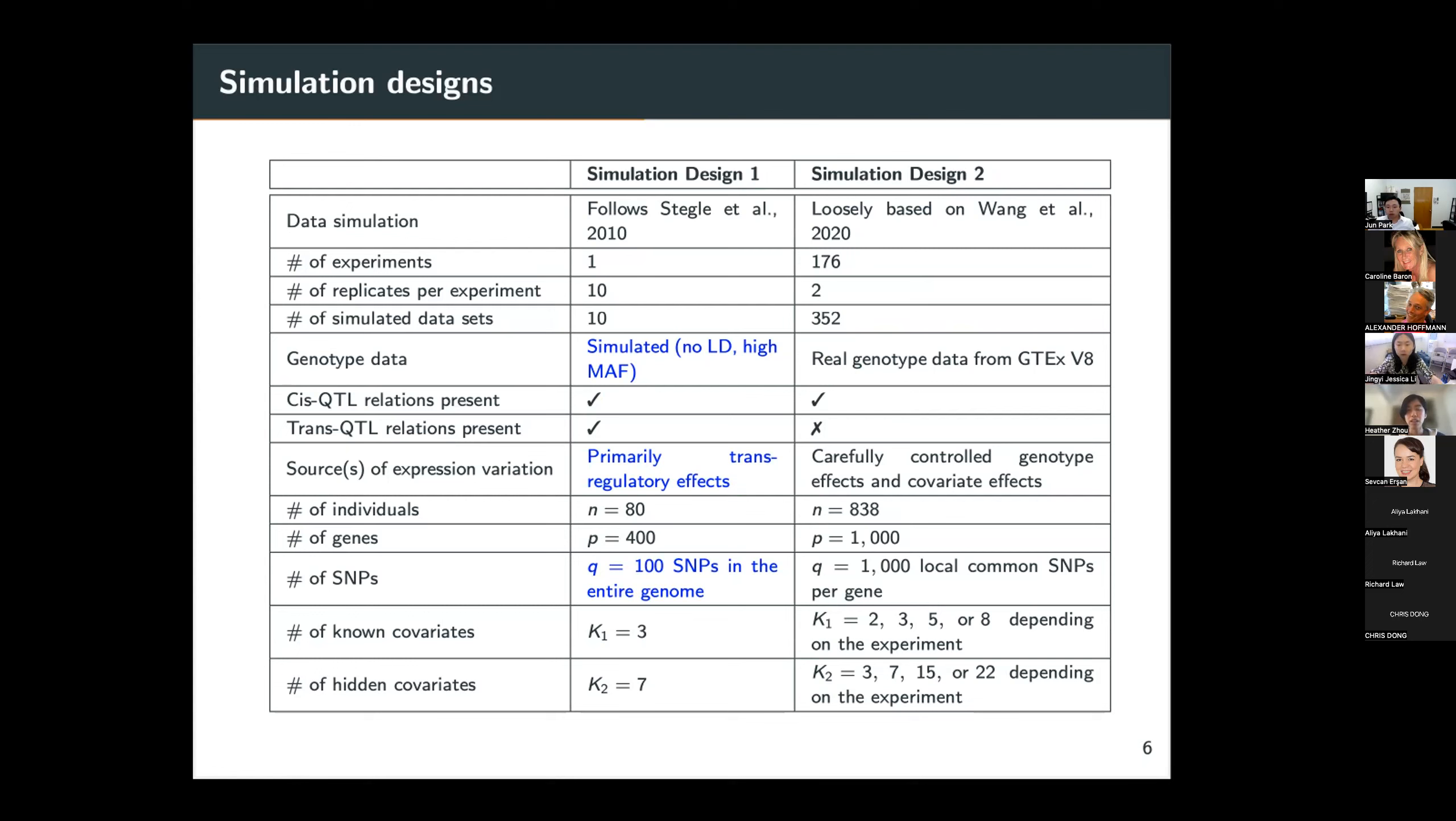We found that in our research that this simulation design has some data simulation and analysis limitations. For example, the gene expression variation primarily comes from trans-regulatory effects, which is contrary to our understanding of biology, where cis-effects are more prominent than trans-effects.